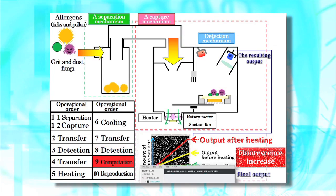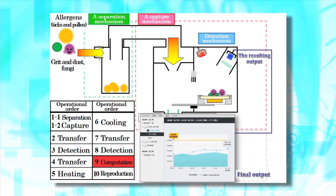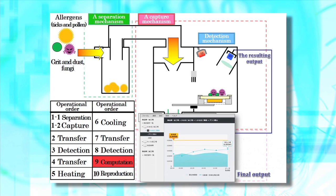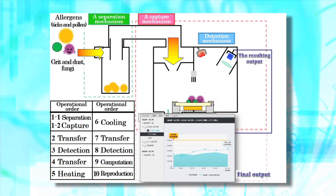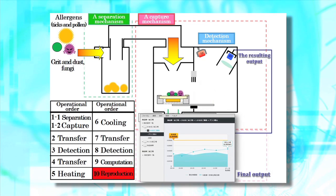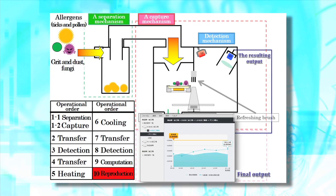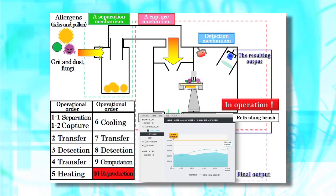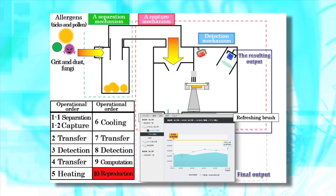Finally, the amount of microbes is calculated from the difference of the amount of fluorescence before and after the heat treatment. After measuring, the capture plate is cleared with the refreshing brush to prepare for the next measurement.